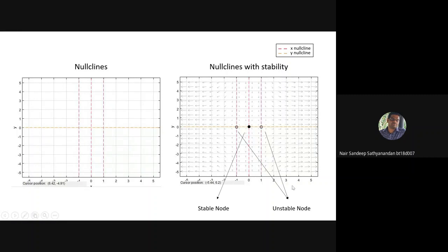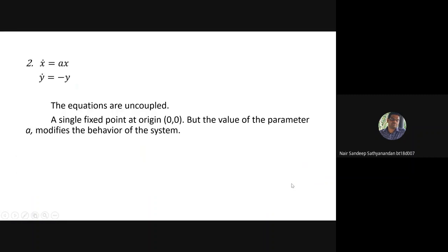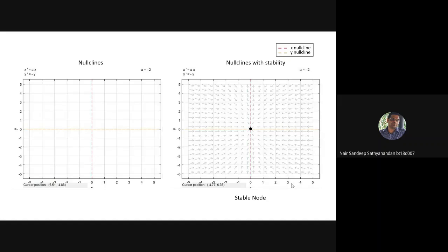Taking another example, x-dot = ax and y-dot = -y. Here these are the nullclines and there is only one fixed point at the center. We can see a few more examples directly in the pplane tool.